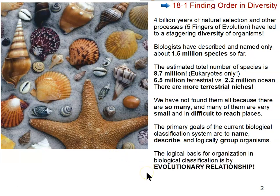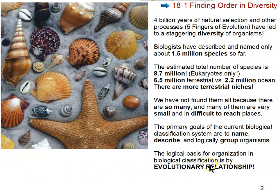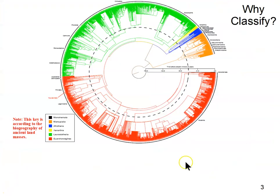We base classification on evolutionary relationship. The biological classification system — the organized way we arrange all discovered species — is based on evolutionary relationship, also known as phylogeny. That's a vocabulary word: phylogeny refers to evolutionary relationships.